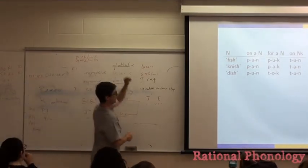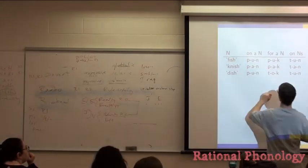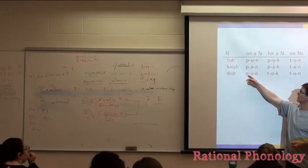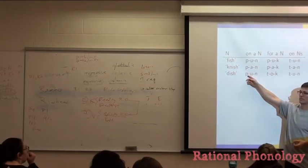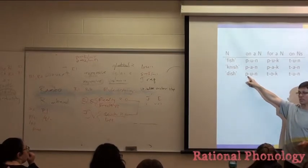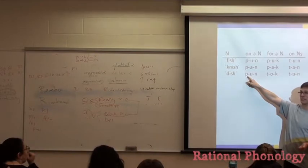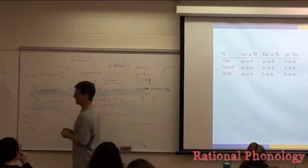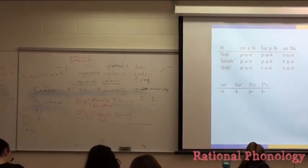So if this is that P should become T before O, why don't we get a T here? Because this is an underlying O. And their P becomes T before O. So we got to make sure that this P doesn't become a T. And how can we do it? Rule order, but how?